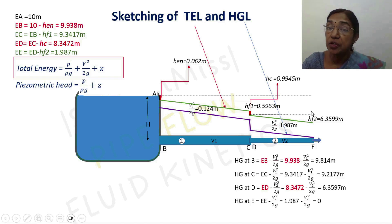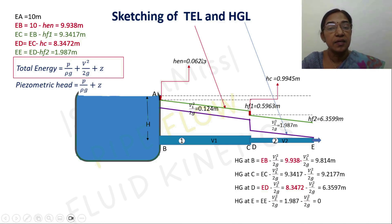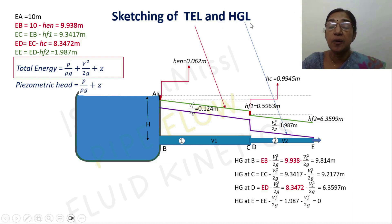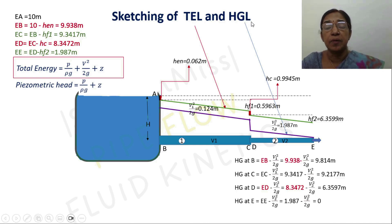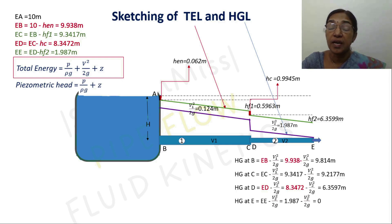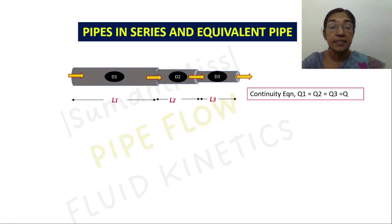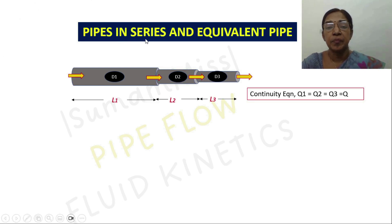The estimation of energy loss encountered by the fluid during its travel is very much essential to draw the total energy line and hydraulic gradient line. The knowledge of drawing the total energy line and hydraulic gradient line is one of the essential steps for a design engineer for the safe design and operation of any hydraulic piping system. In the next section we will discuss the behavior of pipes in series and how an equivalent pipe can be used to replace pipes in series.